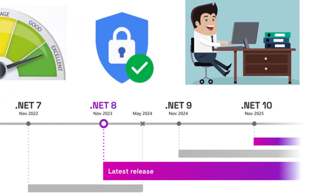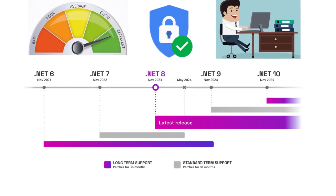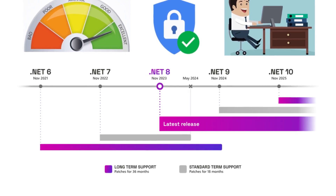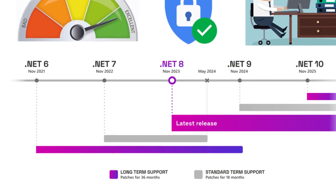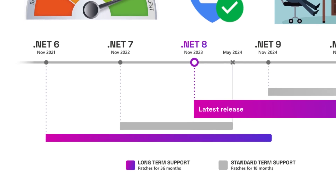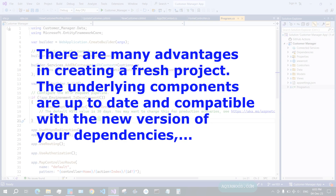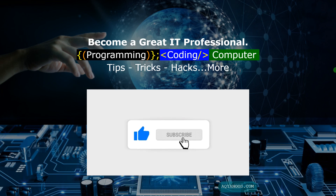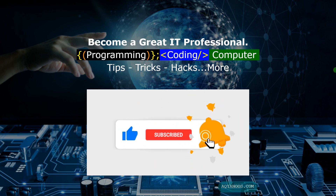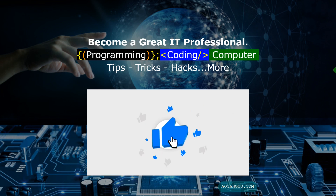Upgrading from one version to another is not that difficult — it is very easy as long as you stay within the range of long-term support. Microsoft supports .NET 7 until November next year, so there is still one year of support. But if you want to upgrade from a very old version of .NET, it is best and fastest to create a new project with the new template and bring your code inside accordingly. Thank you so much for watching — I hope it was helpful and clear. Your support means a lot — please like the video and subscribe to the channel.